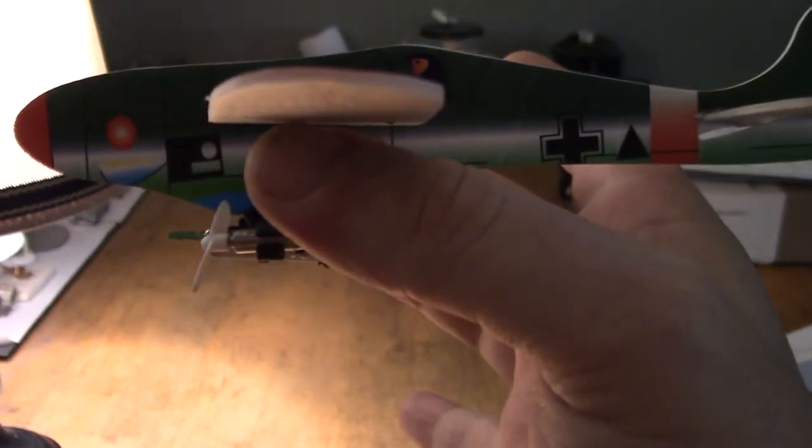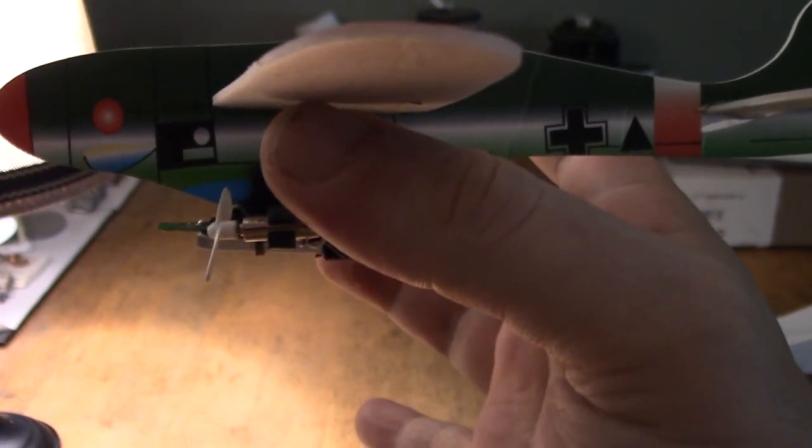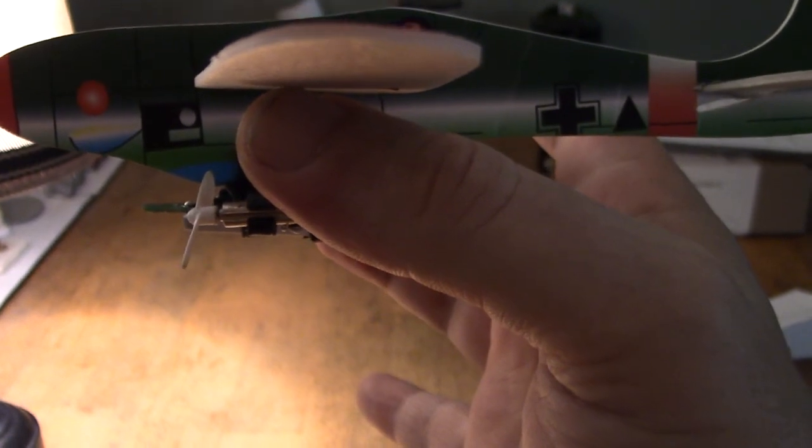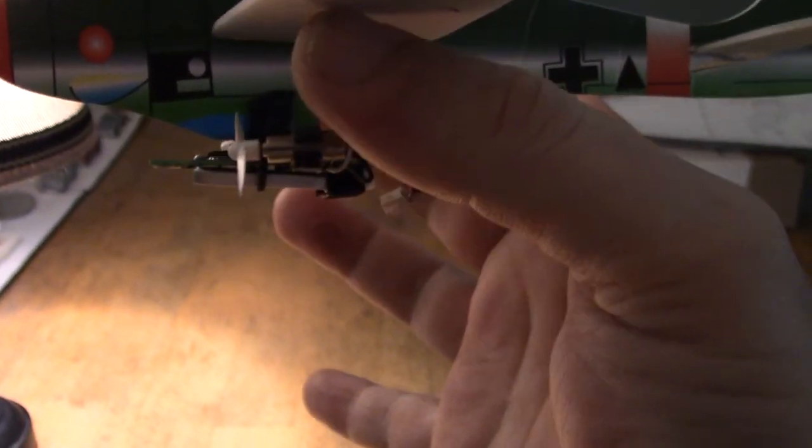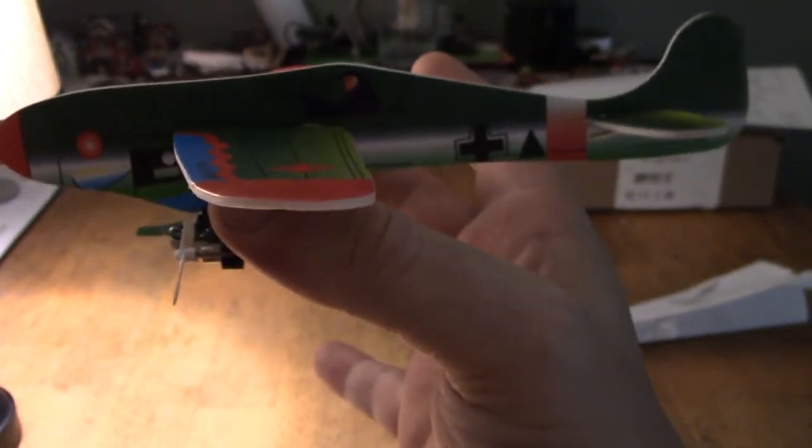There we go, we've got the pod on there, and you can see by the corner of my fingernail perhaps, that's where the center of gravity is now. So that should be about right, about 30%, something like that. I can move it backwards and forwards anyway by moving the power pod. But that's how I'm going to try it.